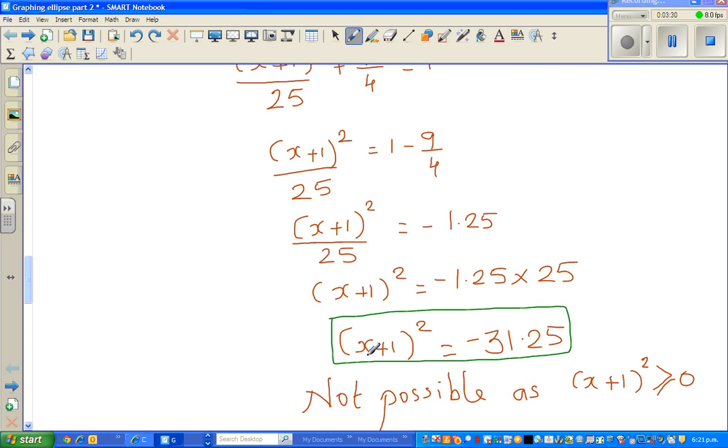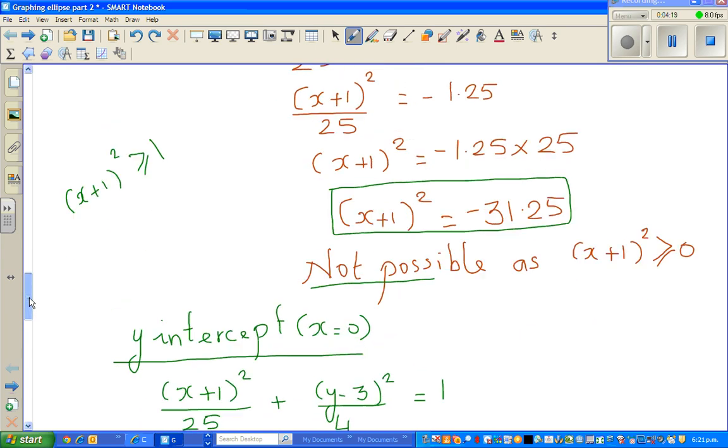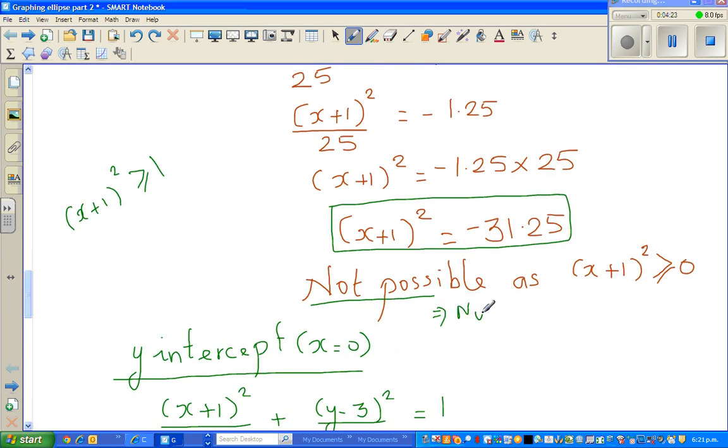Now, this is a perfect square, and if you square, irrespective of the value of x, this square would always be greater than or equal to, so I can say that x plus 1 squared will always be greater than or equal to 1. Because if you set this equal to 0, 0 plus 1 squared is equal to 1. If this is positive or negative, and if you square that, that will be greater than 1. Now, this can never be equal to minus 31.25, and that's why I wrote, it's not possible. So what does this mean? This implies no x-intercepts. So that's how we have shown algebraically.